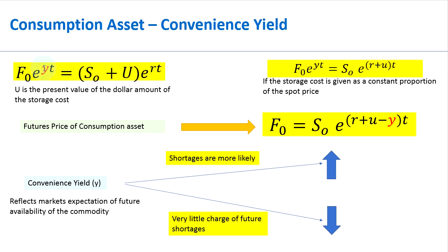You can think of the convenience yield as the market's expectation of the demand or availability of the commodity in the future. If we are looking at a one-year futures price and shortages are more likely — in other words, there's going to be a huge demand for this commodity — then the convenience yield will be very high. That means if the convenience yield is high, the futures price is going to be quite low compared to the spot price, because everyone is going to buy the commodity now rather than waiting a year.